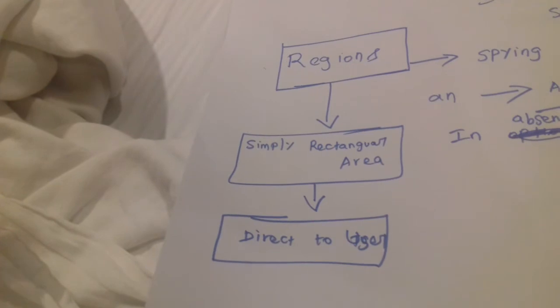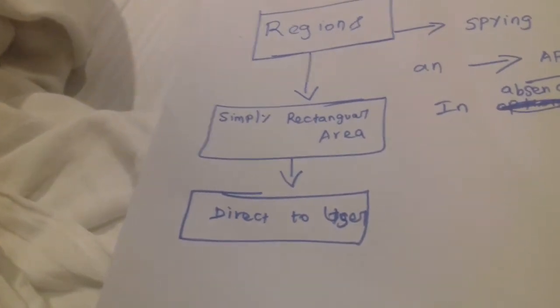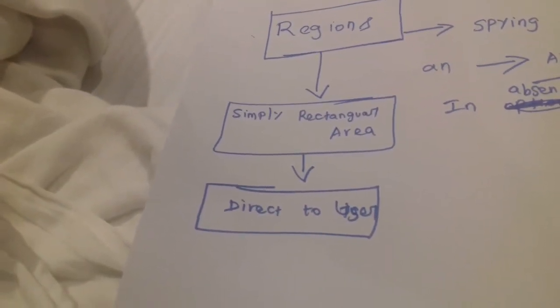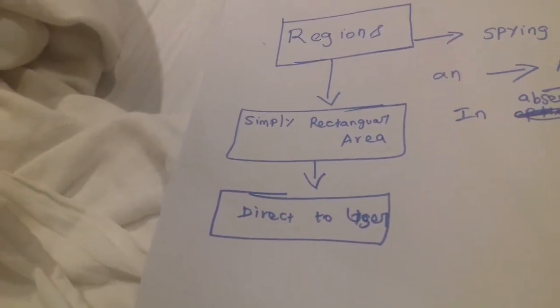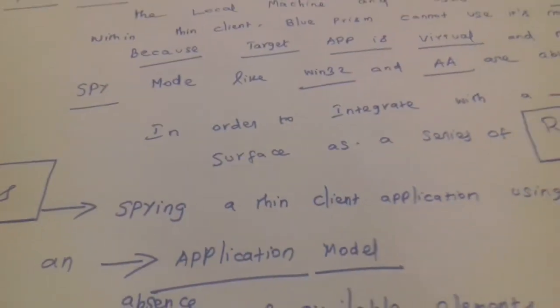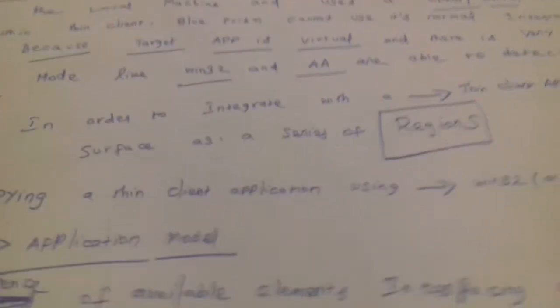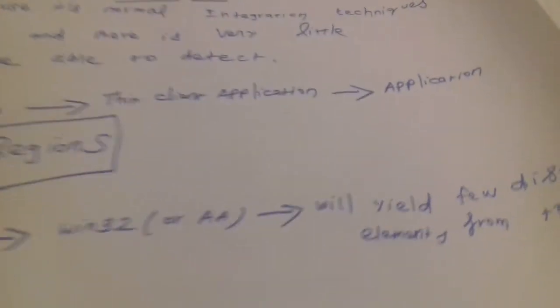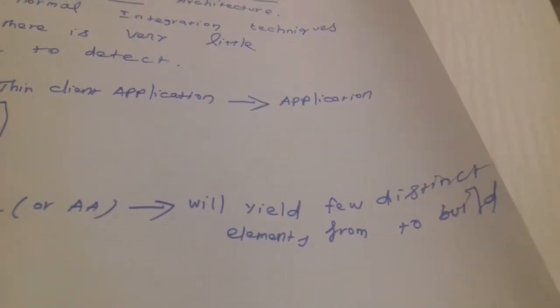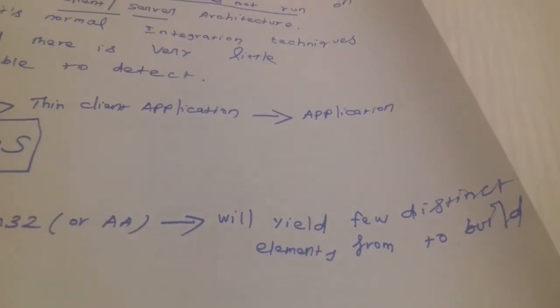It will direct to the user model. This is a simple rectangular area within the model. When spying in a thin client application using Win32 or AA, it will yield few distinct elements to build an application model.